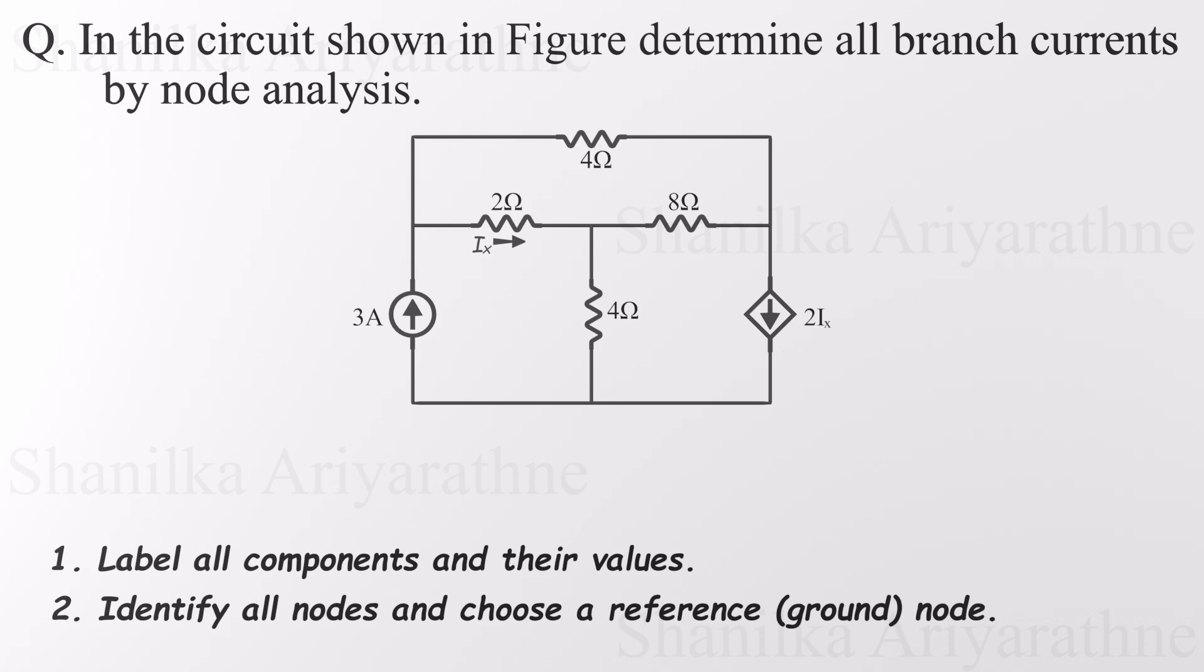Step two is to identify all the nodes in the circuit and pick one to be the reference or ground node. So what exactly is a node? It's any point where two or more circuit elements are connected. And here's a key detail: if two points are connected directly, without any resistor or source between them, they're considered the same node.